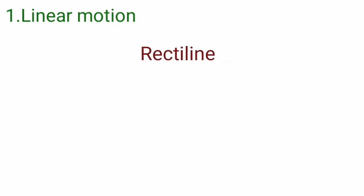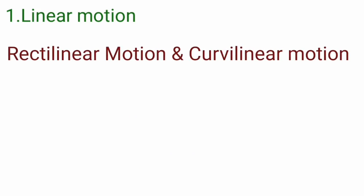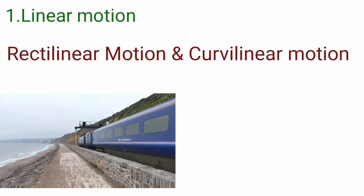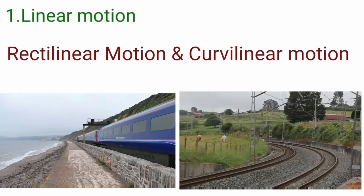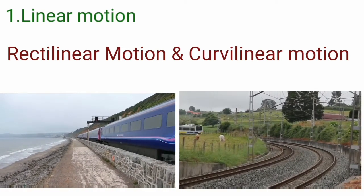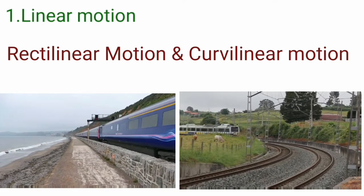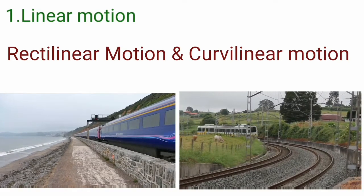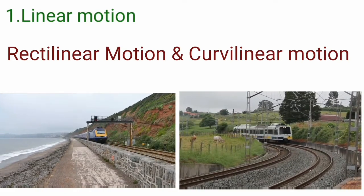In rectilinear motion, the path taken by the object is a straight line. Whereas in curvilinear motion, the path taken by the object is curved.